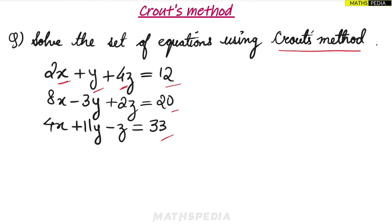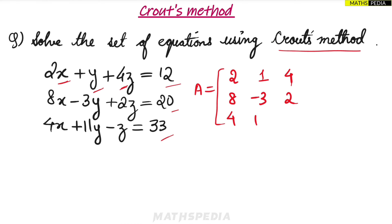The A matrix contains the coefficients. The first equation gives 2, 1, 4; the second equation gives 8, −3, 2; and the third equation gives 4, 11, −1. This is a 3×3 matrix since there are three equations.